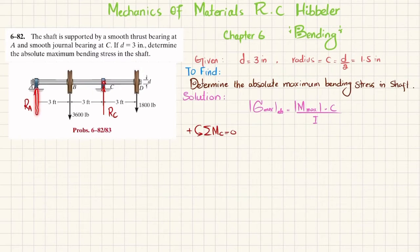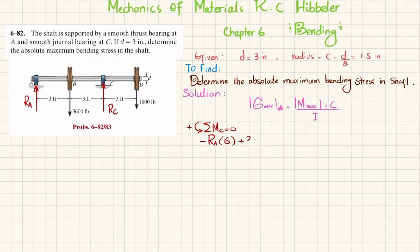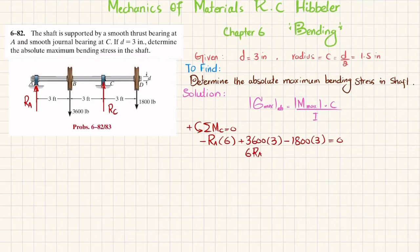About point C: R_A times its perpendicular distance of 6 feet produces a clockwise moment, so it is negative: −R_A × 6. The 3600-pound force at perpendicular distance 3 feet produces a counterclockwise moment, so +3600 × 3. The 1800-pound force at perpendicular distance 3 feet produces a clockwise moment, so −1800 × 3 = 0. From this, 6·R_A = 5400 pounds, giving R_A = 900 pounds.